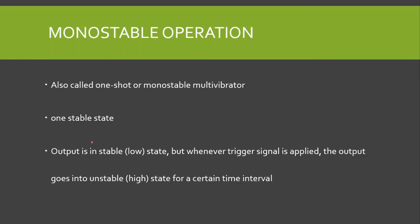In this case the output of the 555 timer is in a stable state, that is it is in the low state. But whenever a trigger signal is applied, the output changes from the stable state to an unstable state. The output goes into the unstable state, which is a high state, for a certain interval of time, and that interval of time is T = 1.1 × R1 × C1.